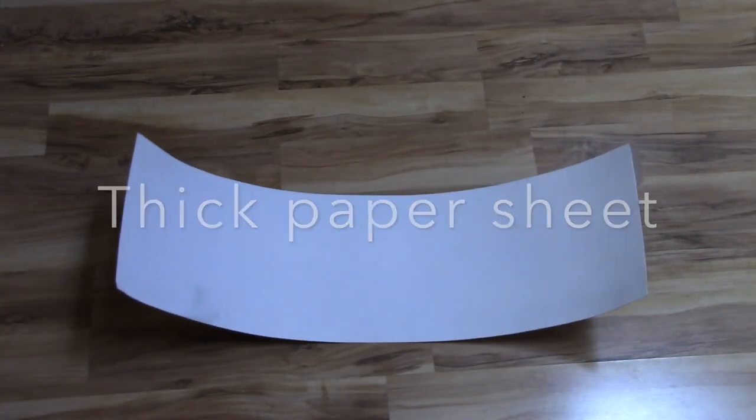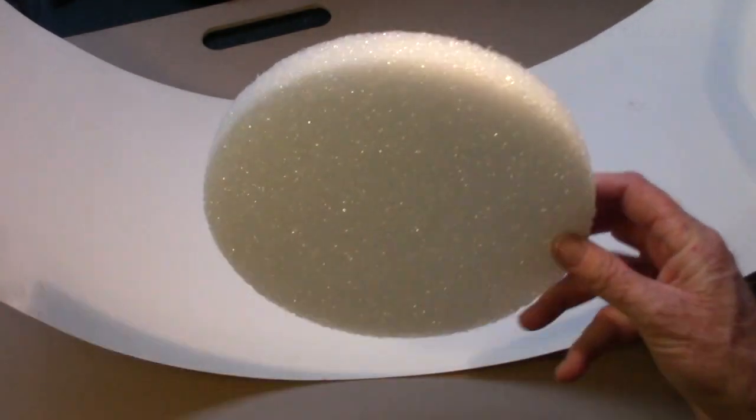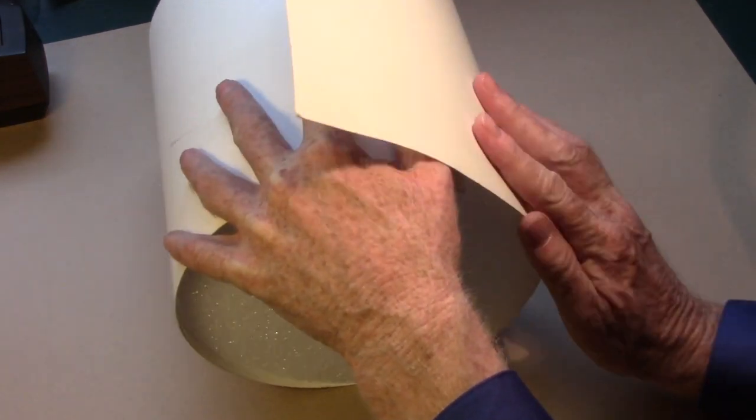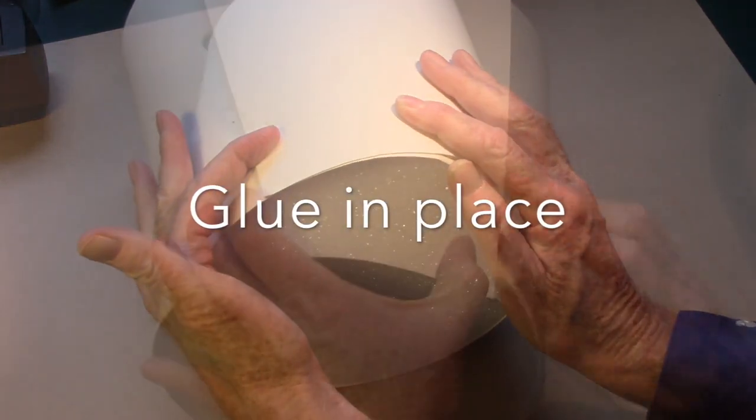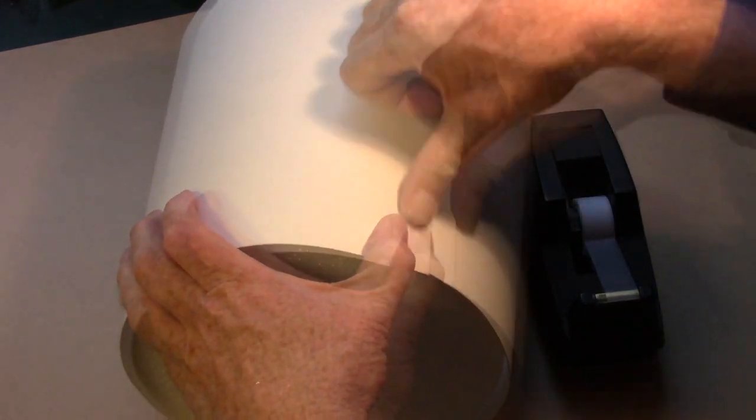I've cut this sheet of paper down to size to make the body of R2D2. To start, go ahead and take the Styrofoam circle and wrap the paper around it. It's a little tricky, but glue it in place and also use tape to hold it in place.